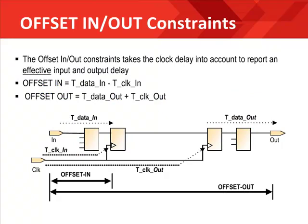This example shows how the tools use the clock distribution delay to calculate the effective offset in and offset out delay. The clock delay is a significant factor in the effective delay and cannot be ignored. Because the input data path and clock path are in parallel for input paths, the tools subtract the clock distribution delay from each input path. Likewise, because the output data path and the clock path are in series for output paths, the tools add the clock distribution delay to each output path. Therefore, having a positive clock distribution delay helps your input times but it hurts your output times.